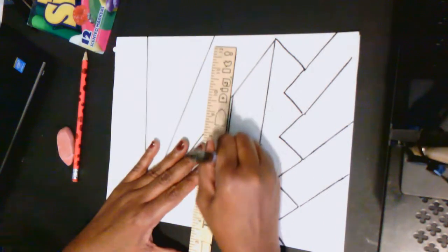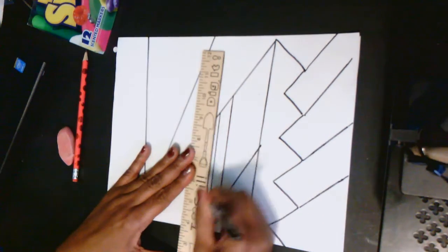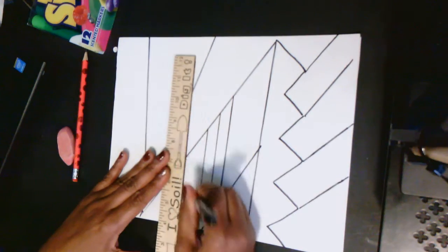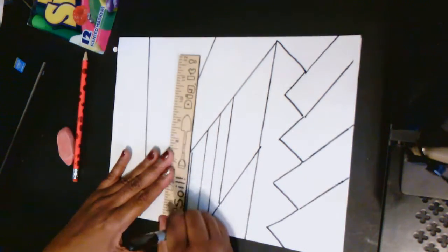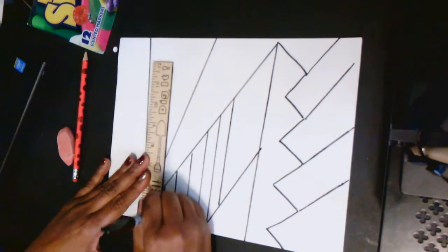So using a straight edge or your ruler, you are going to draw the lines that you are going to later fill in with lots of bright colors.